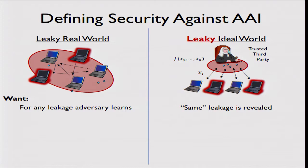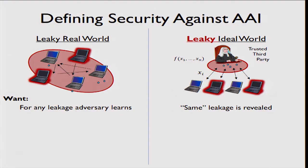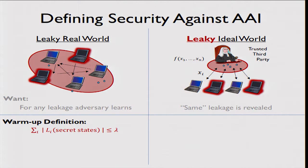The intuition behind the real/ideal world paradigm is that whatever is given to the simulator in the ideal world is the information you're giving up on. The function evaluation will obviously be given. If the adversary leaks some bits of a party's inputs, that information must be given up in the ideal world — he's learned it. But we want to make sure no additional information beyond that is leaked.